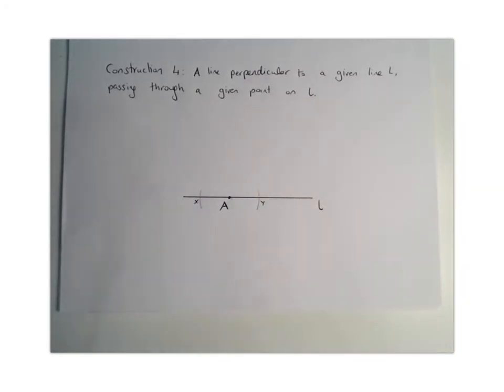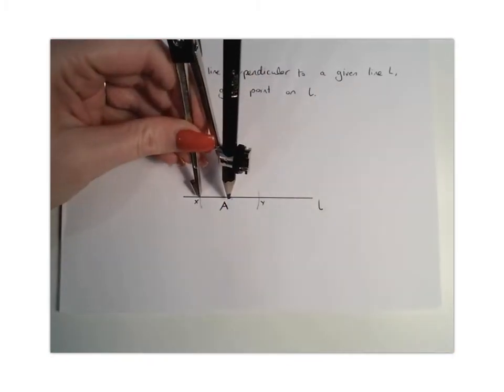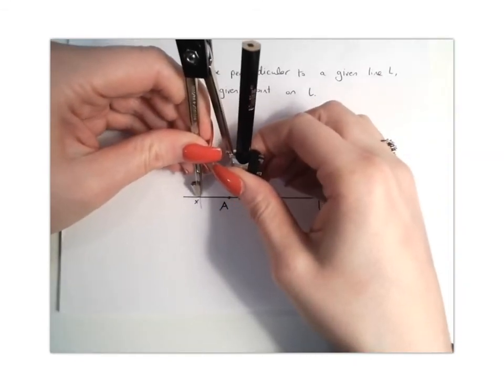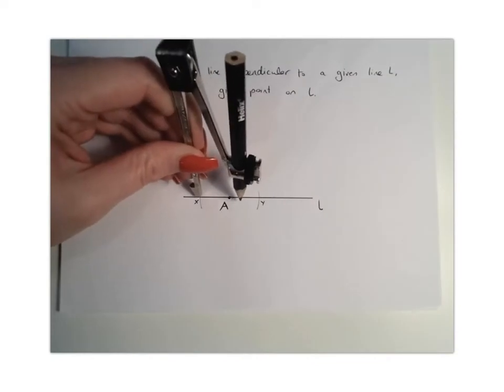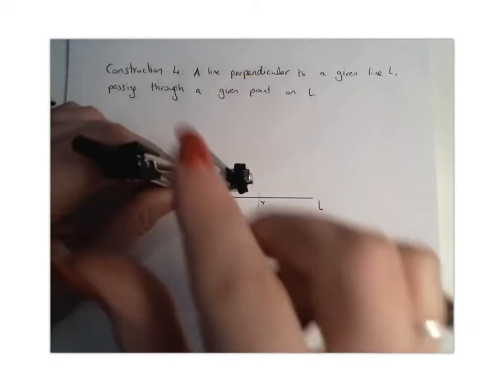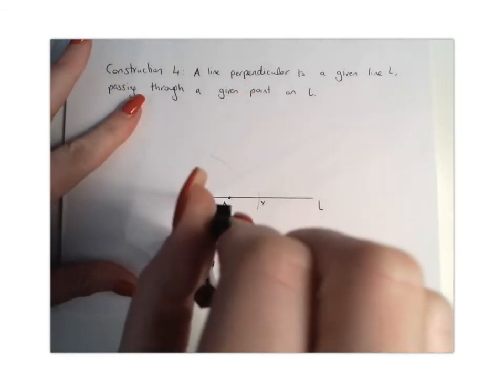What we're going to do next is place our compass down at X, and stretch your compass to more than halfway along this line. We're going to basically go back to construction number two now, where we find the perpendicular bisector of a line segment. Draw an arc at the top of the page, or you can do it at the bottom as well.